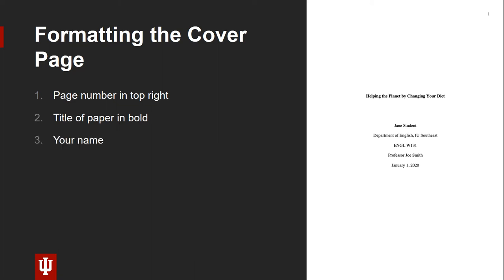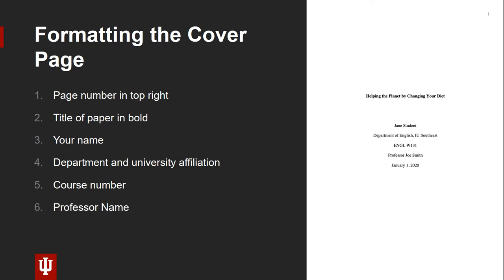After the title, press enter twice — the only time in the entire document this is needed — and type your name. Next, you should type the department of the course and your university affiliation; in our case, it's acceptable to type IU Southeast. The next line should indicate the course number, and you may also write the course name. Next, type your professor's name. Finally, add the date the paper is due, writing out the entire name of the month rather than the number.